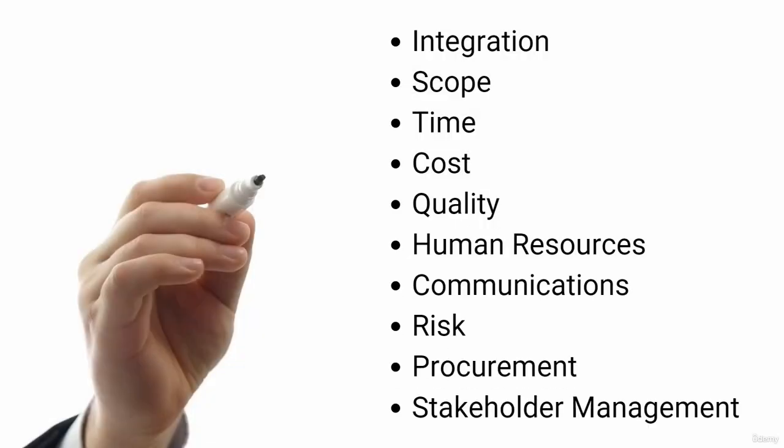In Project Management, there are 10 knowledge areas that are used to manage projects from start to finish. These 10 knowledge areas are Integration, Scope, Time, Cost, Quality, Human Resources, Communication, Risk, Procurement, and Stakeholder Management. In this video, we will explain each knowledge area and provide examples of how they are used in Project Management.